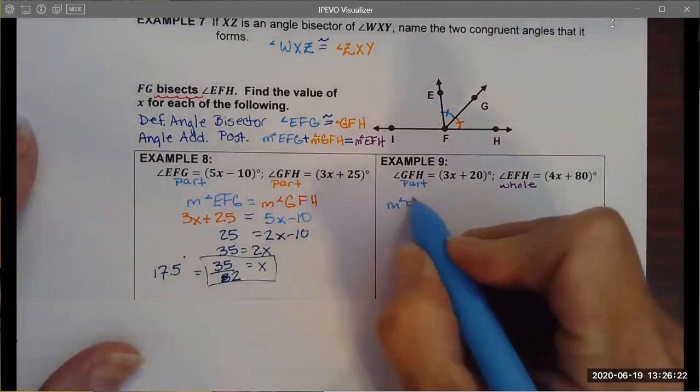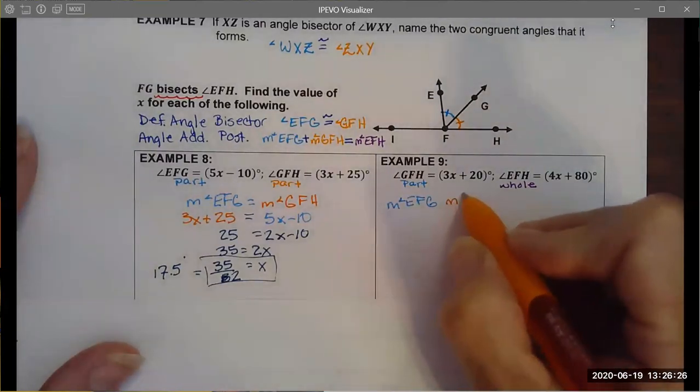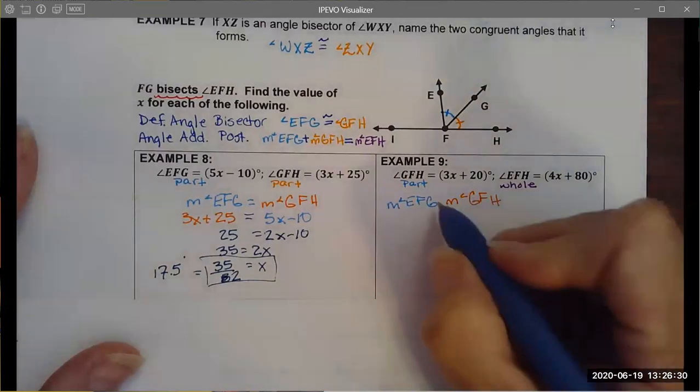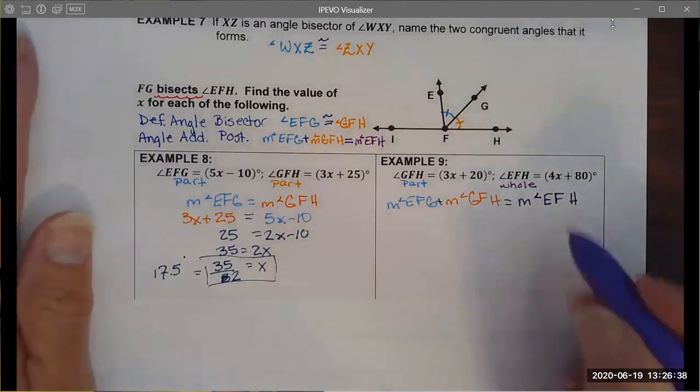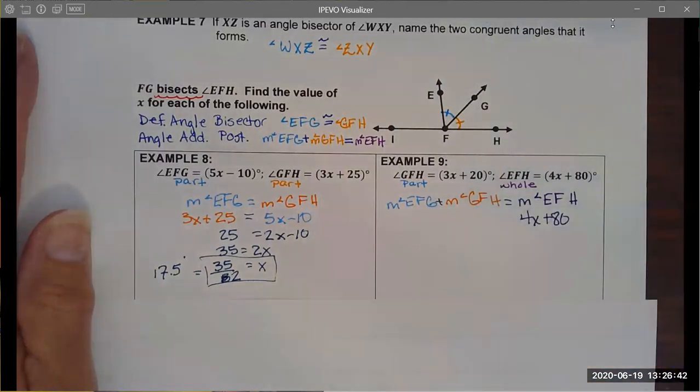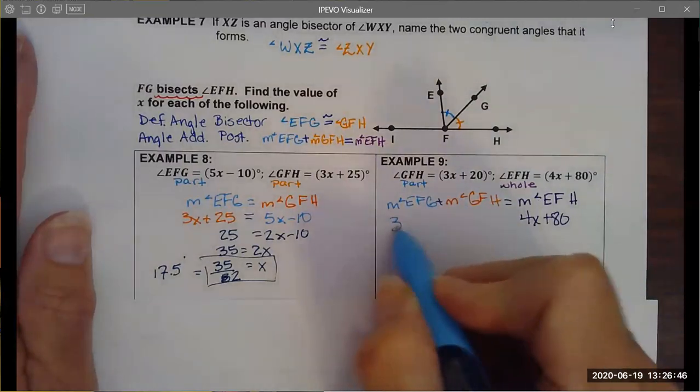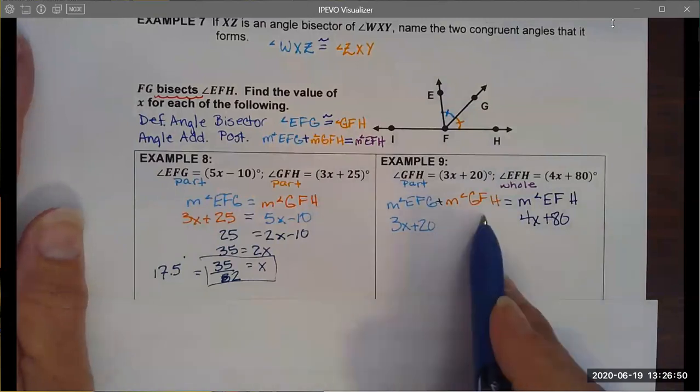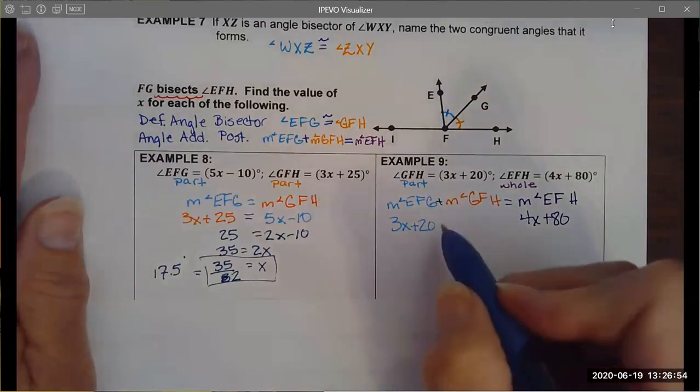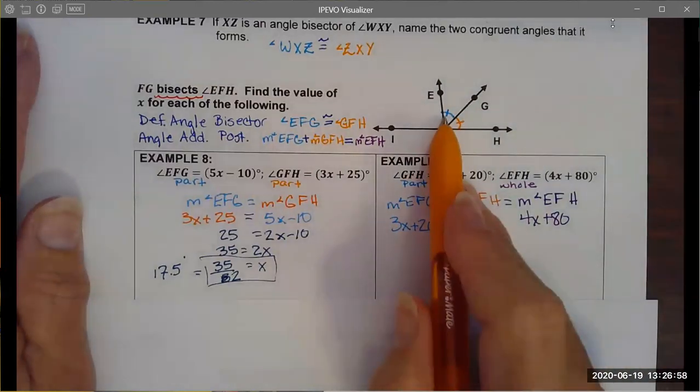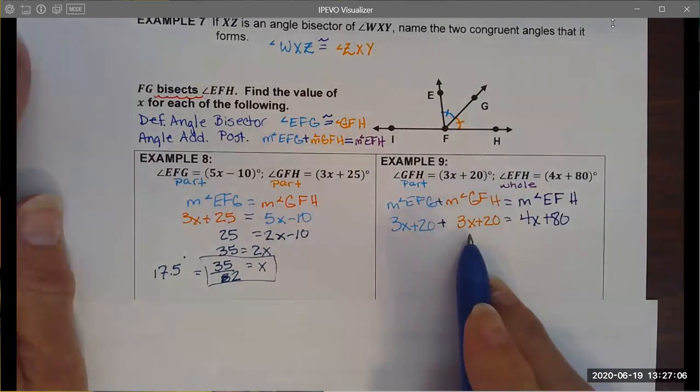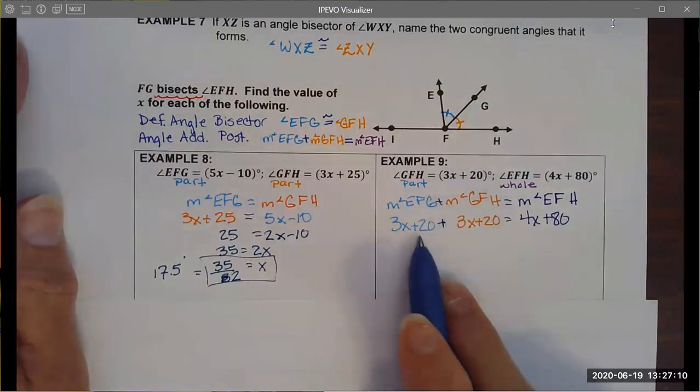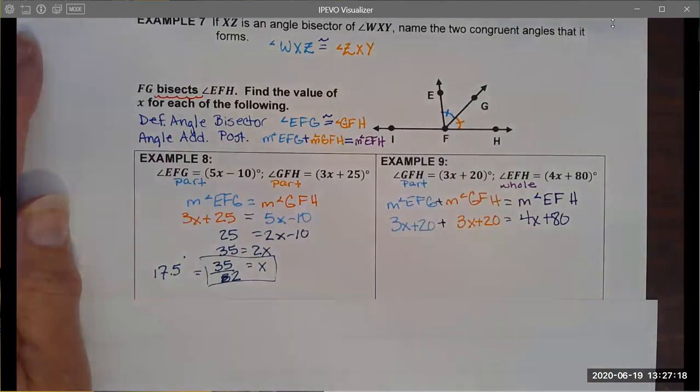Because I know from the definition of angle bisector that my blue angle is equal to my orange angle, what I can do is I can use my angle addition postulate. I can say that the measure of angle EFG plus the measure of angle GFH, I'm going to add these and set it equal to the measure of angle EFH. I know EFH so I can substitute that in. I know the measure of EFG, it tells me this is 3x plus 20. When I'm confronted with filling what the measure of GFH is, I need to remember that these two angles are congruent and so I can use this 3x plus 20 here because these are equivalent and congruent angles.